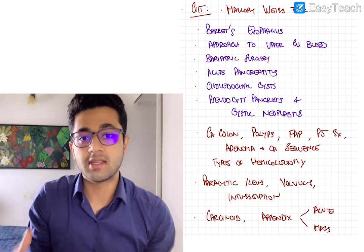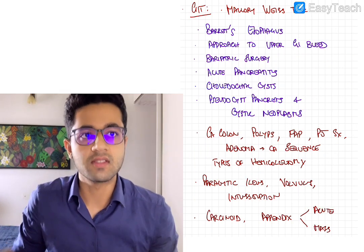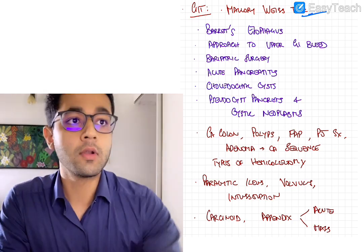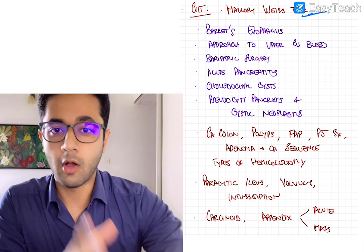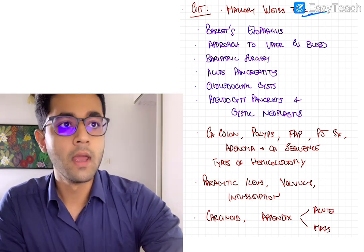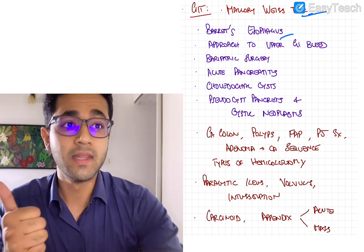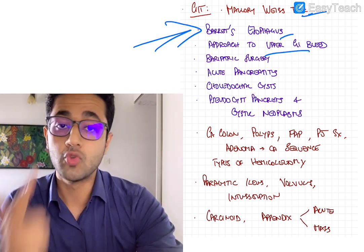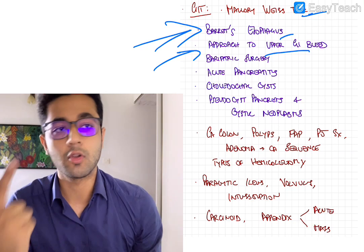Next, GIT. So GIT, I've tried to compress it as much as I can because you know how vast GIT gets. So in GIT, Mallory-Weiss tear, mildly important, but the rest, everything in purple is very important. Barrett's esophagus, probably the most important topic from GIT. So Barrett's esophagus, approach to a UGI bleed, again, the second most important topic.